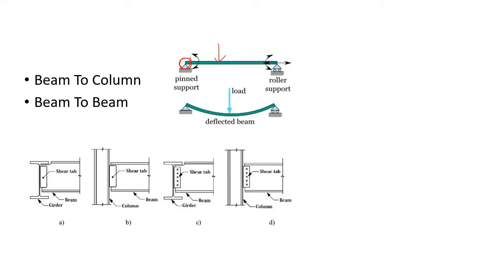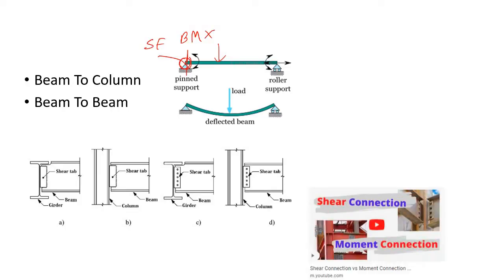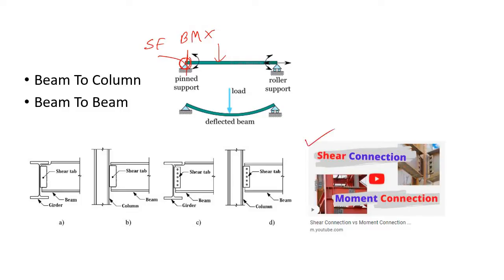The specialty of a pin support is that there is only shear force and no bending moment. In real life, to construct this pin support you need to use a type of connection known as a shear (CR) connection. You can go to the description for a link to a video discussing shear connection and moment connection in depth.